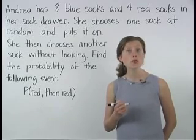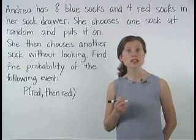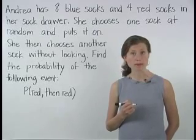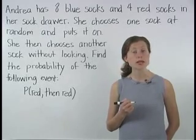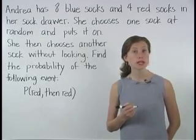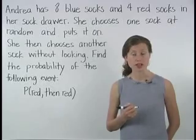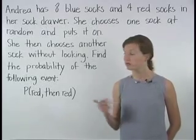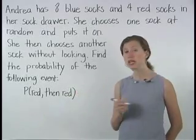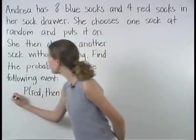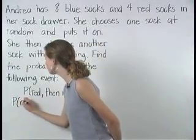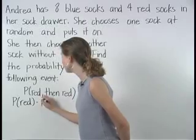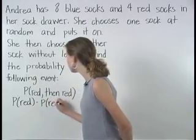Since there is no replacement, these events are dependent. We can find the probability of dependent events by multiplying the probability of the first event times the probability of the second event. So here, we multiply the probability that Andrea will first choose a red sock times the probability that Andrea will then choose another red sock.